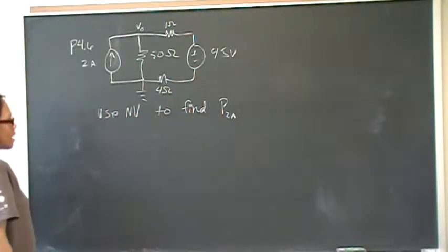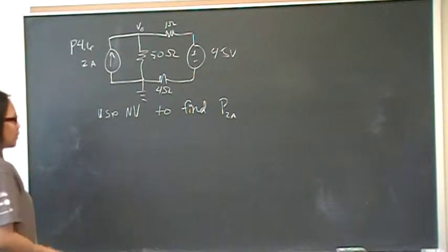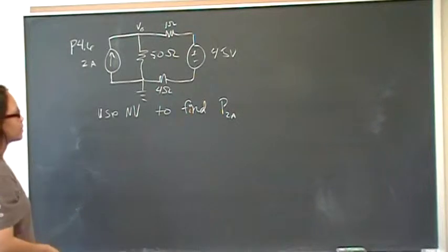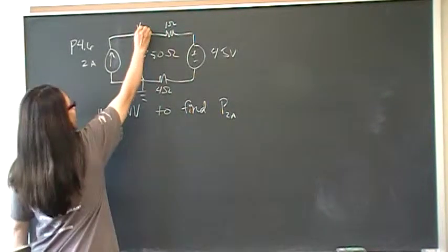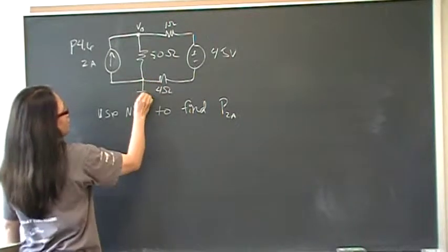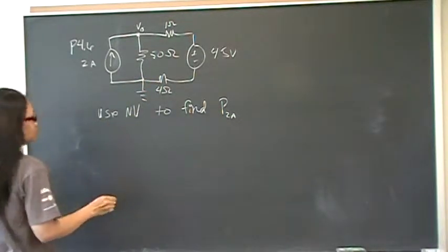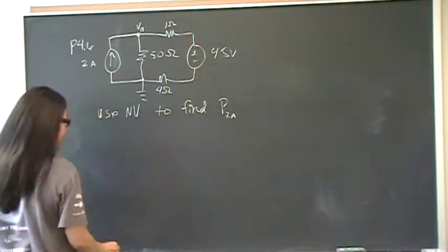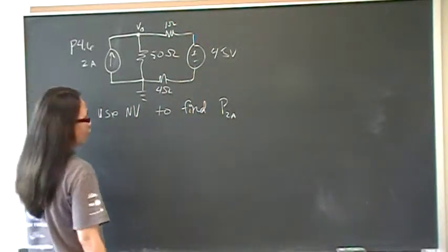And we're asked to use the node voltage method to find the power that's being extracted by the 2 amp source. So, I've called this node here V0 and I've chose my ground as right here. Notice that these 3 here are connected in series, so we have to simplify that before we use a node voltage method.